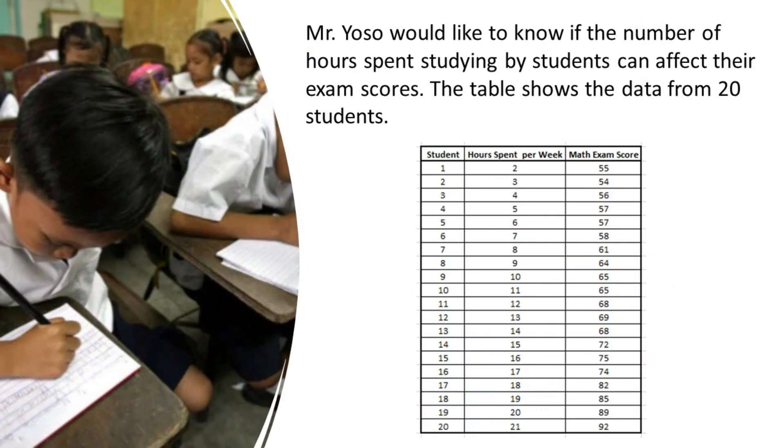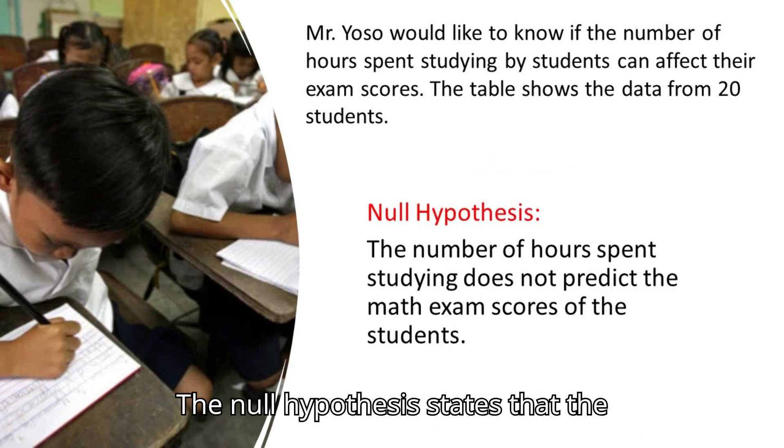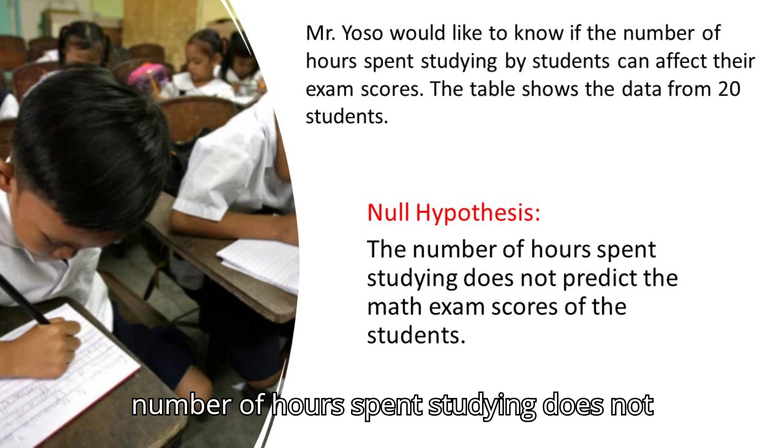Here's an example, Mr. Yoso would like to know if the number of hours spent studying by students can affect their exam scores. The table shows the data from 20 students. The null hypothesis states that the number of hours spent studying does not predict the math exam scores of the students.